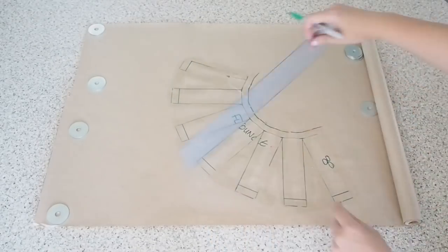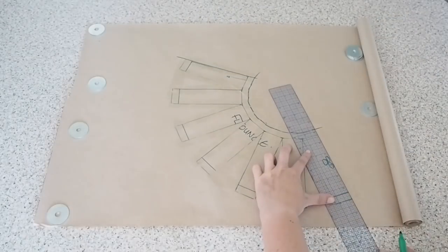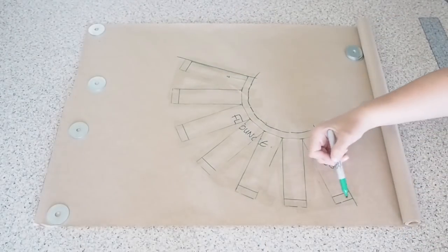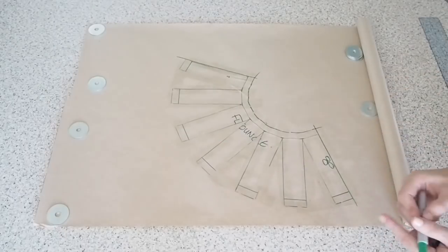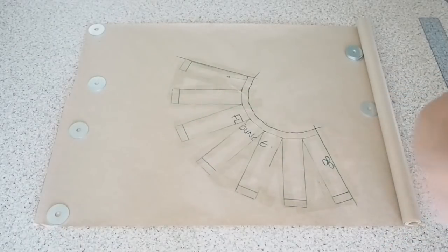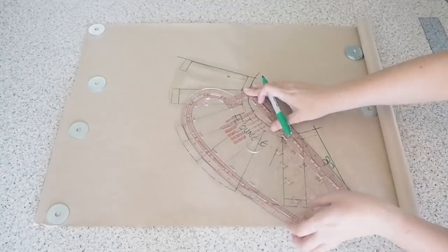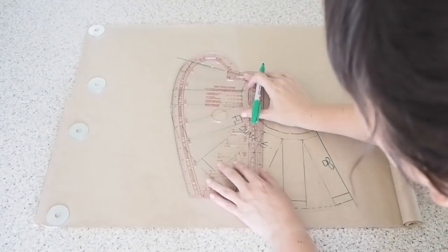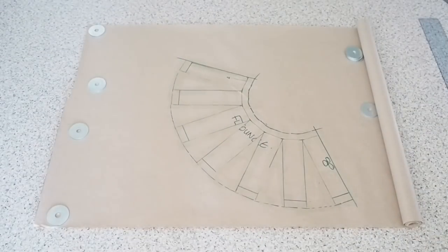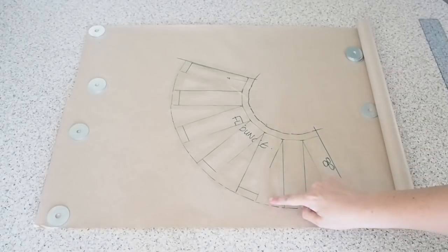And then I'm just drawing a line at the edge of my pattern piece, both top and bottom, just so that you guys can see a little bit better. And the very last thing I want to do to complete my flounce is to just round off the bottom edge. I'm using my hip curve to do it here, but it's not necessary to have a hip curve to do this.